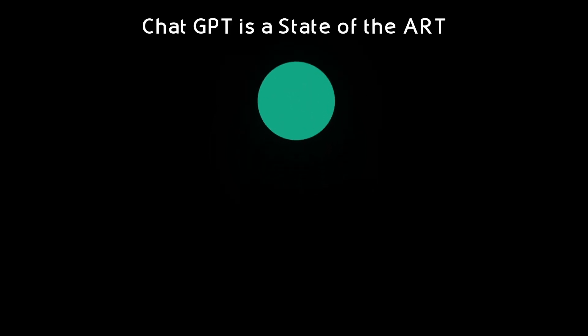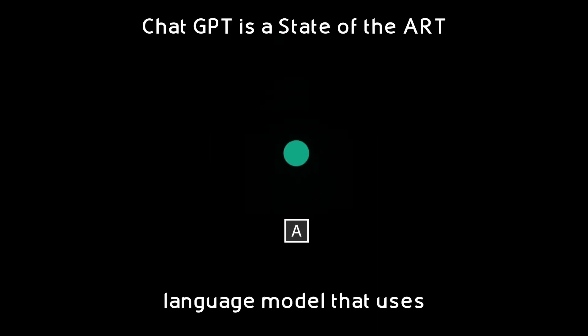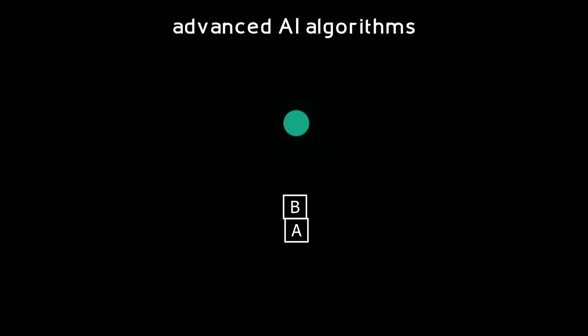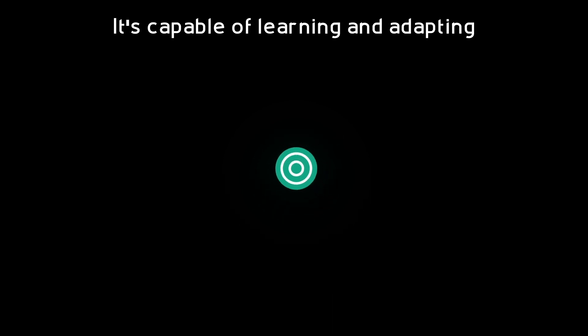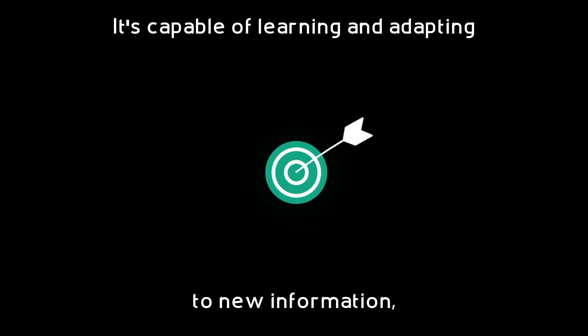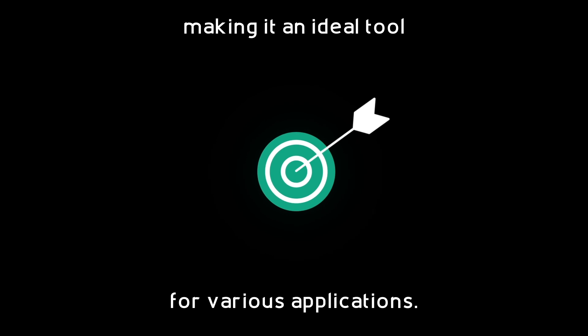In conclusion, ChatGPT is a state-of-the-art language model that uses advanced AI algorithms and machine learning to generate human-like responses to any given text prompt. It's capable of learning and adapting to new information, making it an ideal tool for various applications.